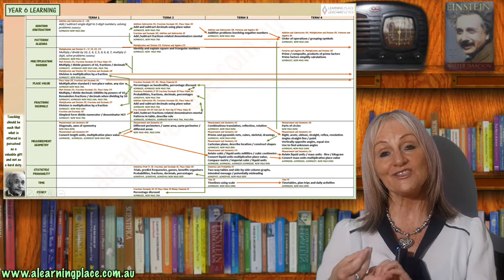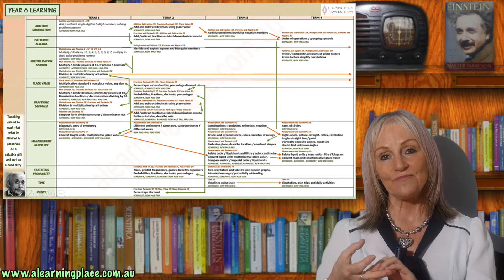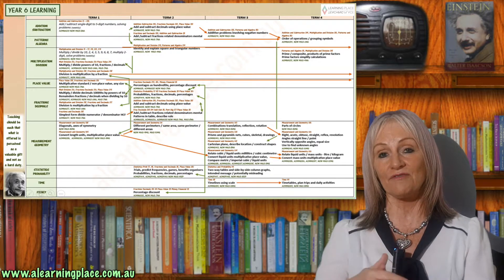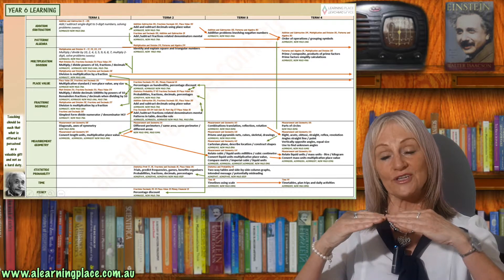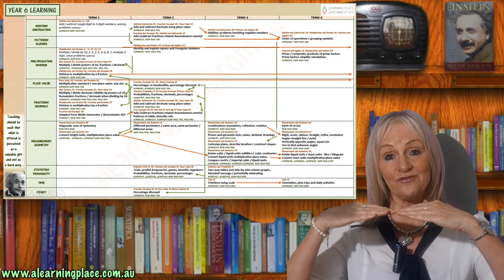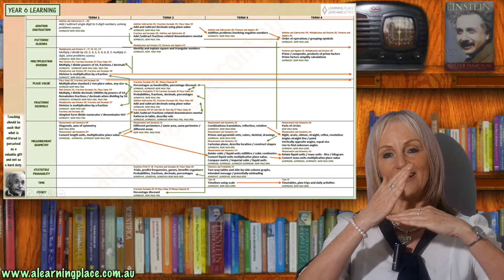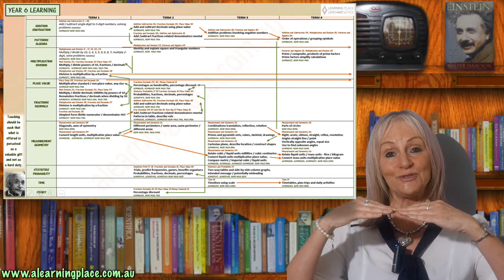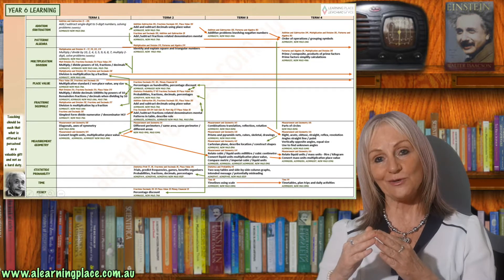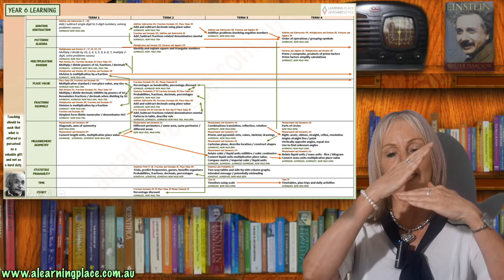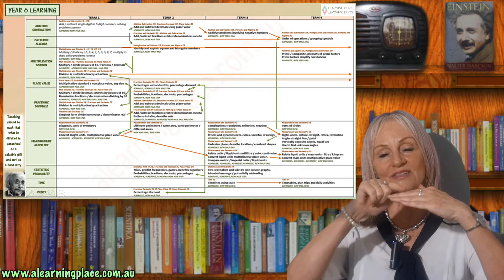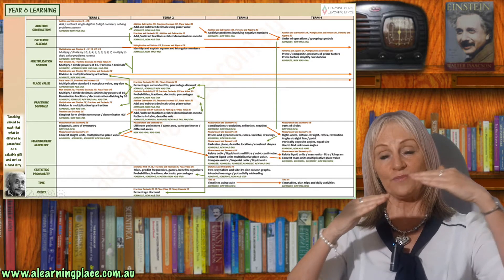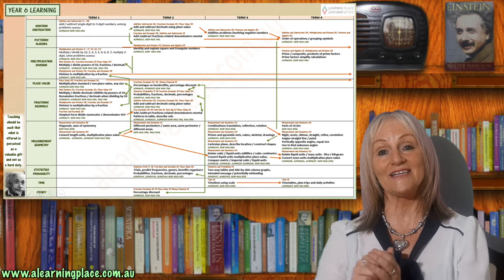Children will also investigate parts of a circle and they will investigate angles — right angles, acute angles, obtuse, straight, reflex and revolutions. They're going to be investigating angles on a straight line, knowing that on a straight line we have 180 degrees. So if we place an angle on that straight line and we know the size of one angle, we can work out the size of the other because it has to add up to 180 degrees. Vertically opposite angles means that if we have a straight line and another line going through it, the angle on one side is equal to the angle on the opposite side. They will then use this understanding to find unknown angles.